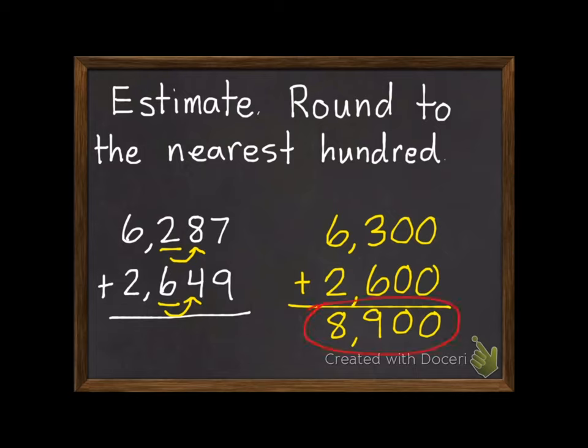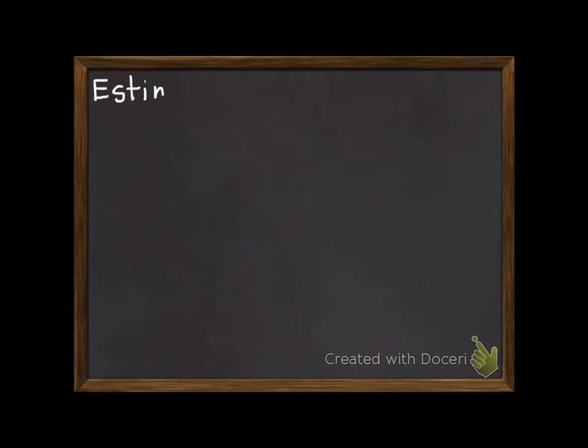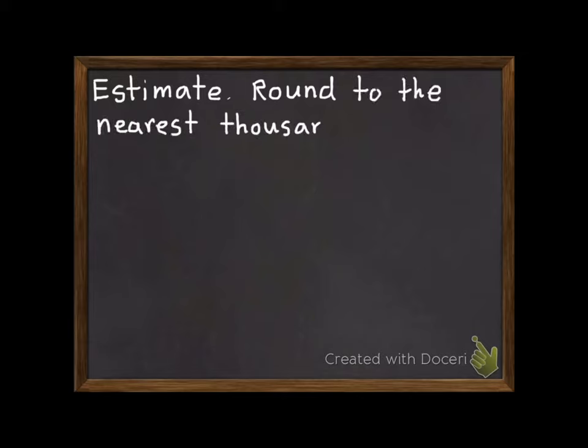So all we're doing today is combining two skills we've already worked on: rounding and adding mentally. My second example problem, estimate, round to the nearest thousand. Make sure you read the instructions carefully so you know where you're rounding to.